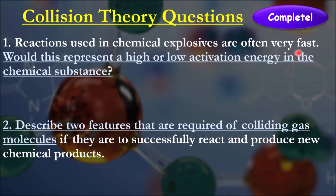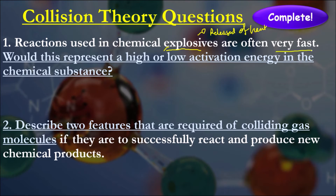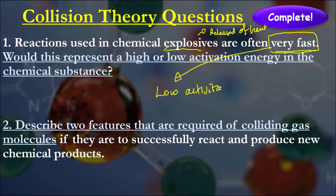Question 1: Reactions used in chemical explosives are often very fast. Would this represent a high or low activation energy? Chemical explosives release heat, so they represent an exothermic reaction. Exothermic reactions tend to have a lower activation energy than endothermic reactions. More importantly, a really fast reaction would represent a very low activation energy, because a low activation energy means the reaction is more likely to occur a lot sooner than one with a much higher activation energy.